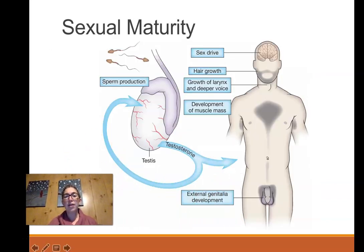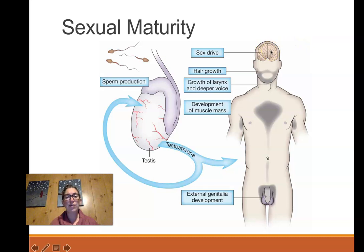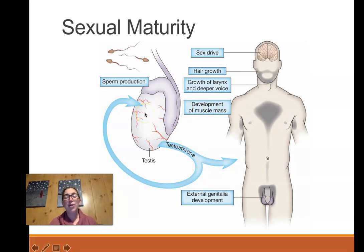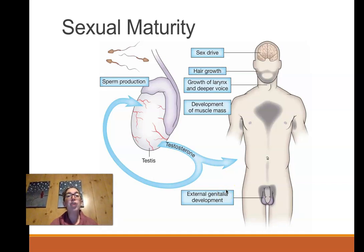Testosterone stimulates all of the physical developments associated with sexual maturity. It influences sex drive in the brain, stimulates hair follicles to produce thicker hair in the face, chest, genitals, and underarms, stimulates growth of the Adam's apple and larynx — changing the male voice — cycles back to stimulate more sperm production, and stimulates growth and development of the external genitalia. Testosterone is the primary reason the male body physically changes during puberty.